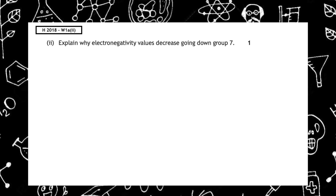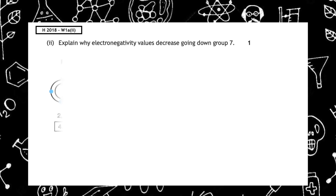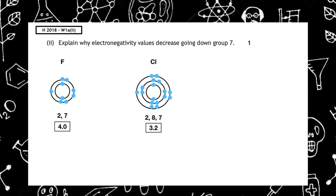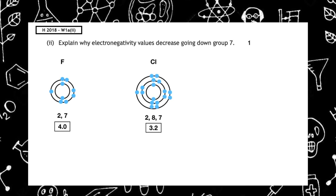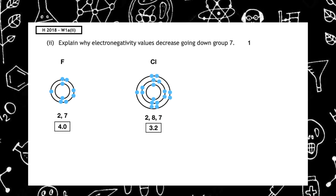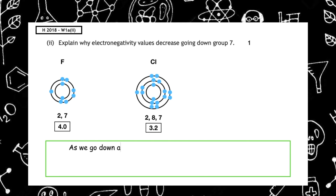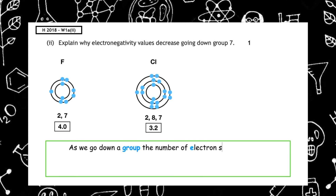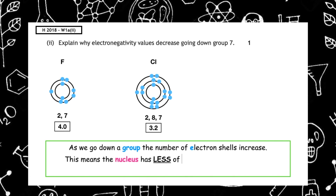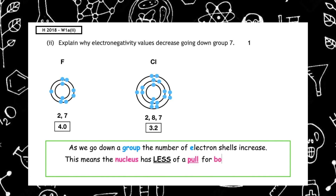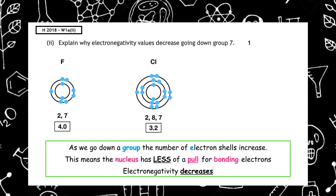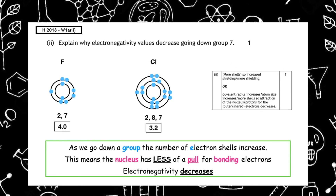Part 2 of the 2018 paper asks us to explain why electronegativity values decrease going down group seven. As we go down a group, the number of electron shells increases. This means that the nucleus has less of a pull for bonding electrons and the electronegativity decreases. This is known as the shielding effect.